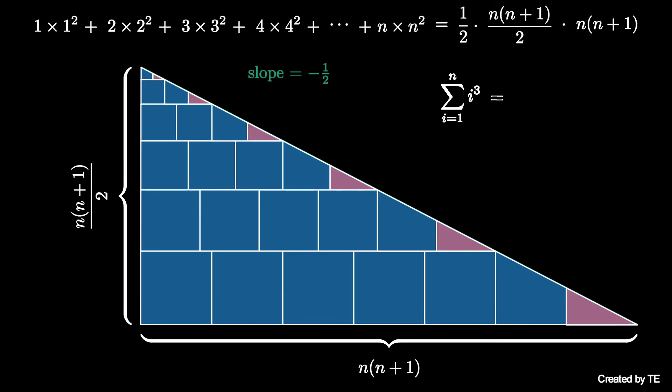From this we can see that the sum of the first n positive cubes is equal to the square of n(n+1)/2.